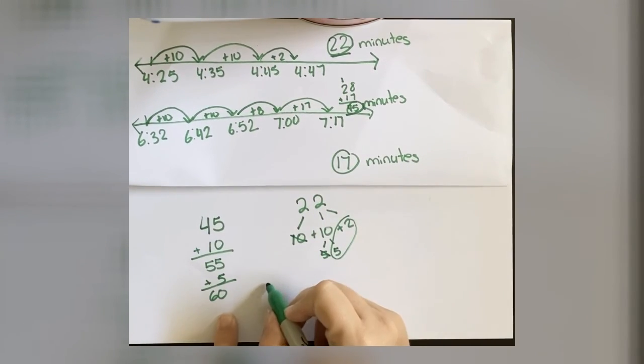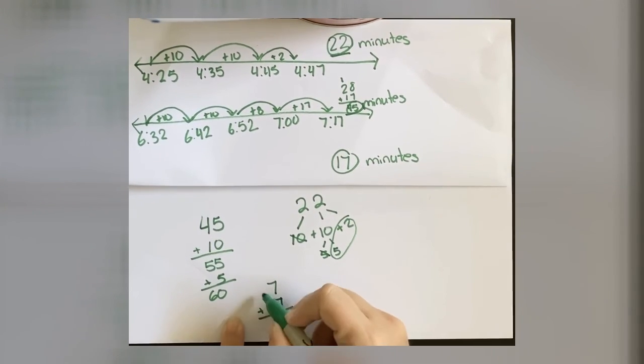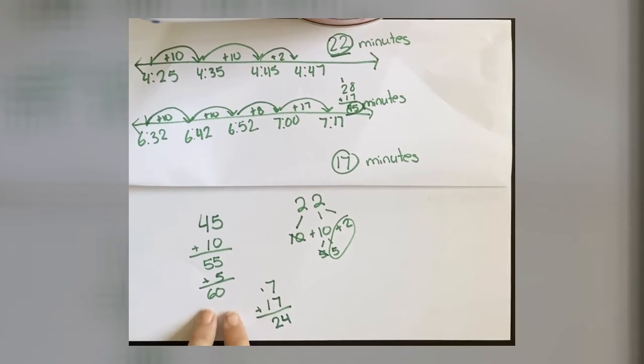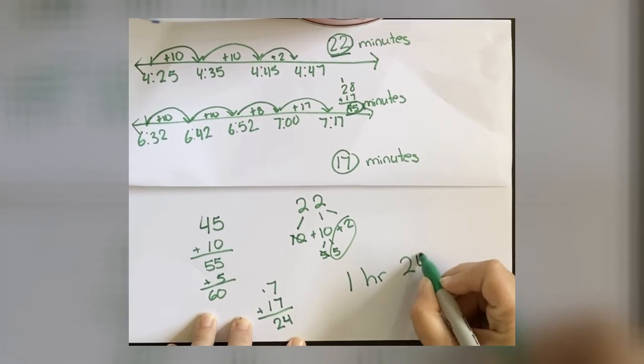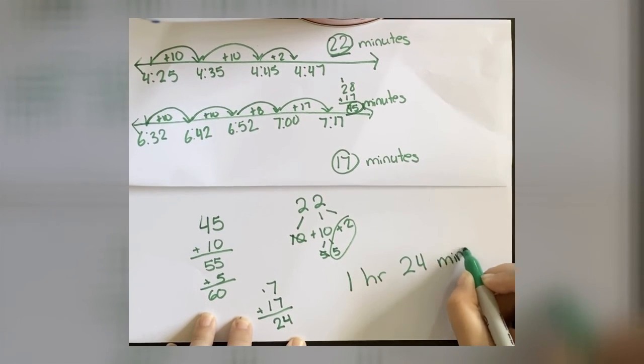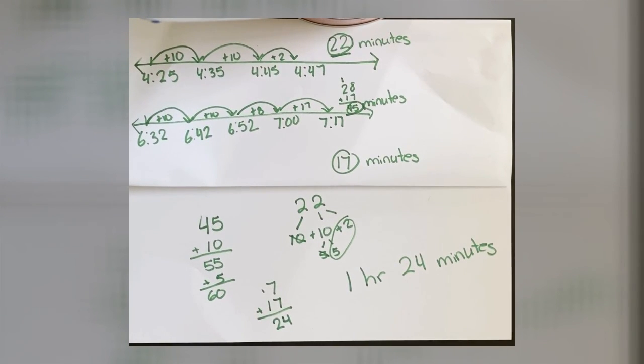So I know that's 7 minutes, and then I still have this 17 minutes here. So if I add these two together, 7 plus 17 is 24. So I have one hour and 24 minutes, so I did meet my goal of reading for one hour. One hour, one hour.